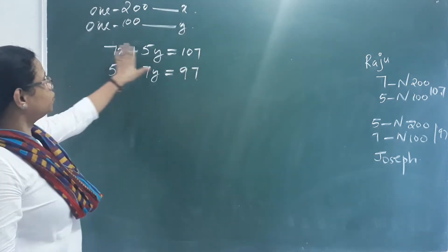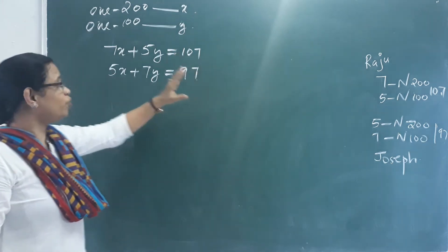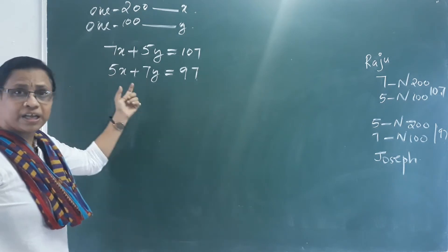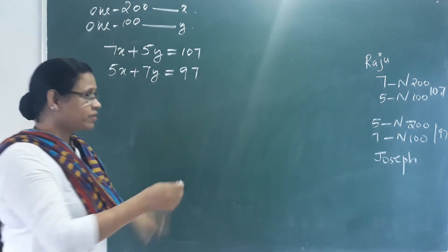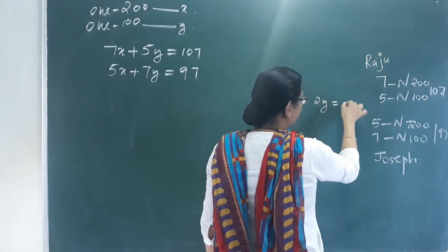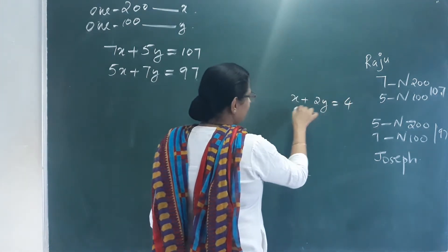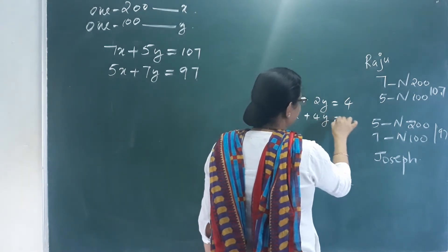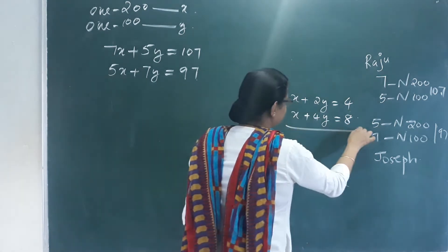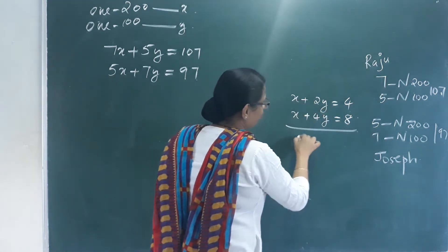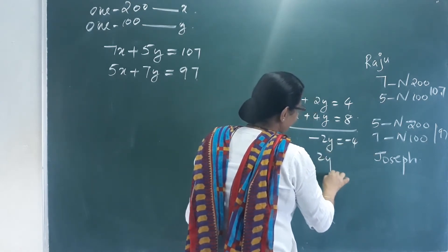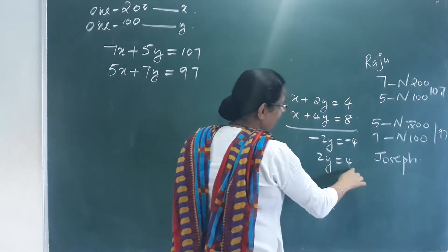Let's see how to solve two equations. For example: x plus 2y equals 4, and x plus 4y equals 8. We use subtraction. Subtracting the first from the second: x minus x is 0, 4y minus 2y is 2y, and 8 minus 4 is minus 4. So 2y equals 4, therefore y equals 2.